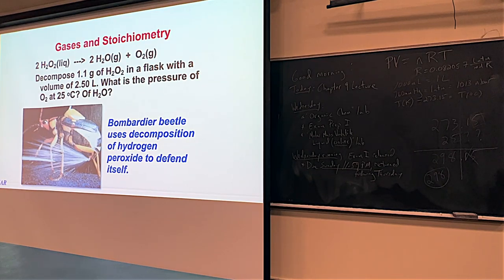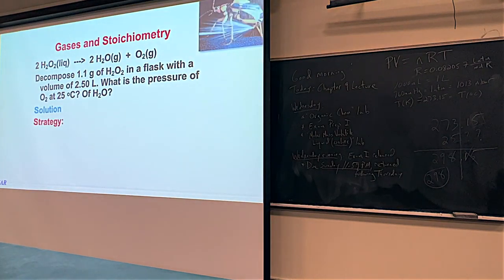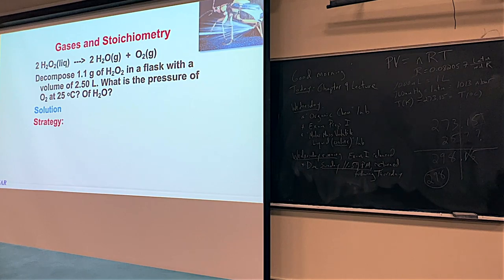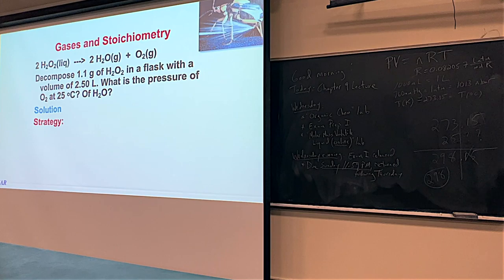The pressures will be in units of atmospheres. The gas law PV = NRT only works for gases — not liquids like hydrogen peroxide and not solids. So we won't use PV = NRT on the hydrogen peroxide itself, but we will use it for the water vapor and the oxygen gas.